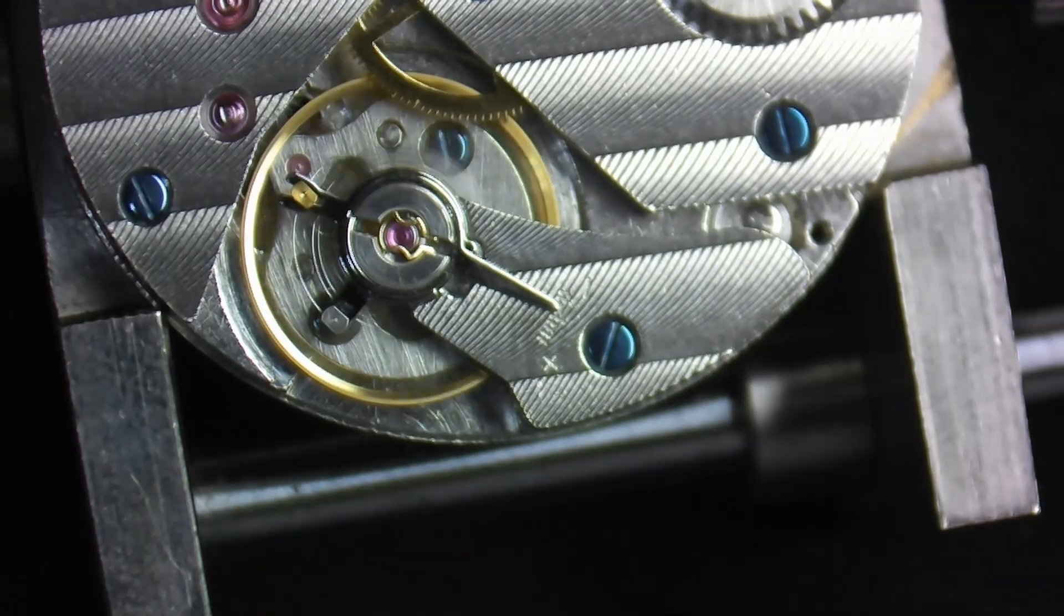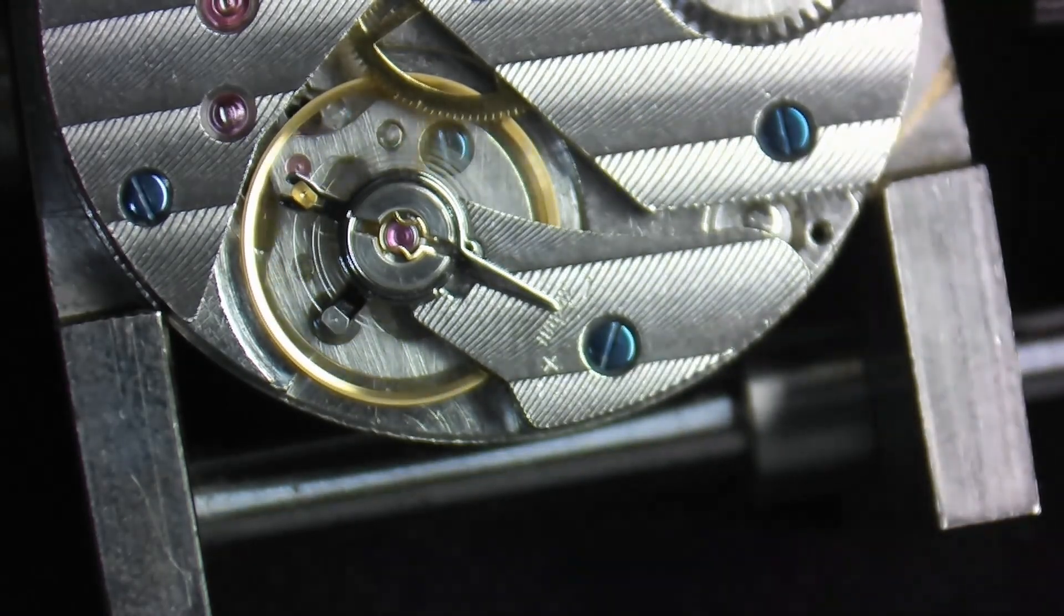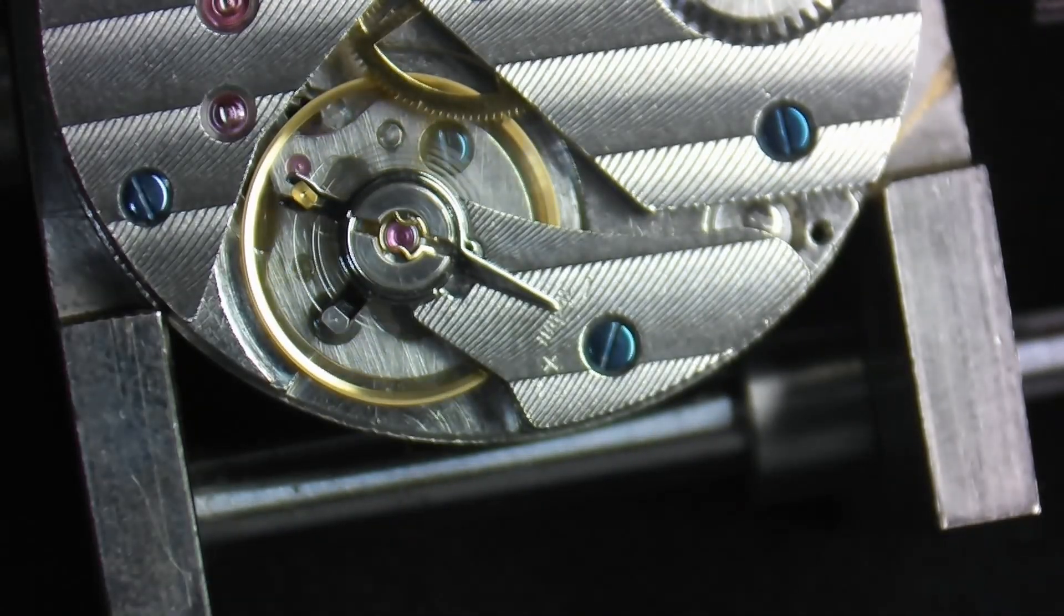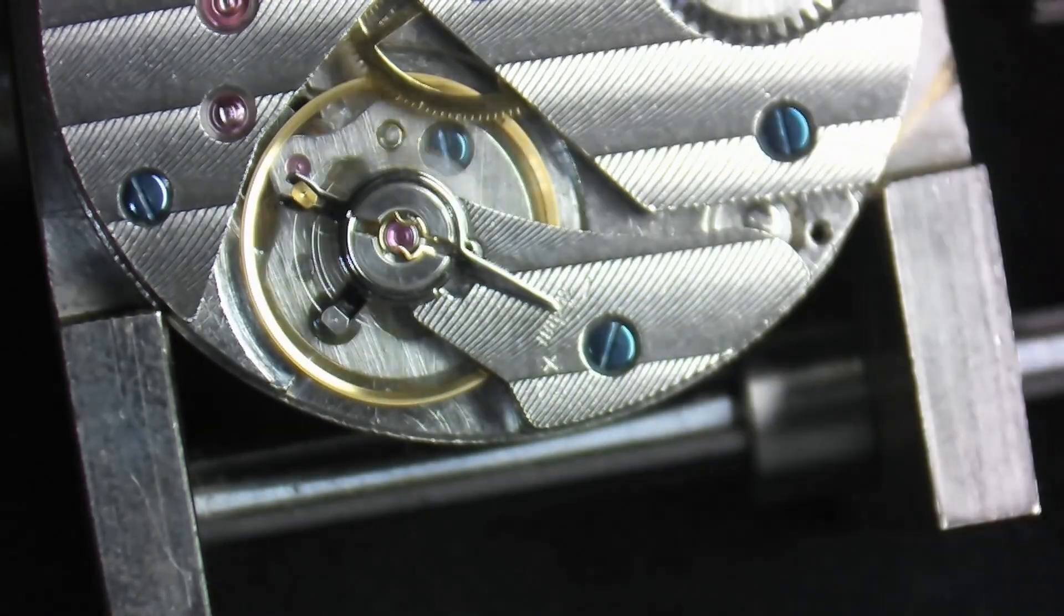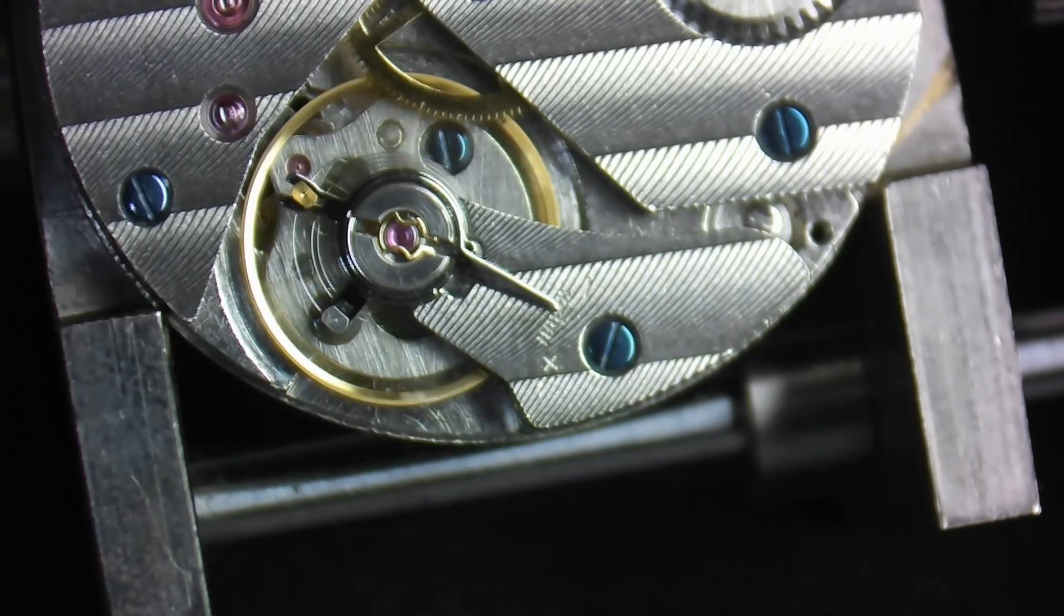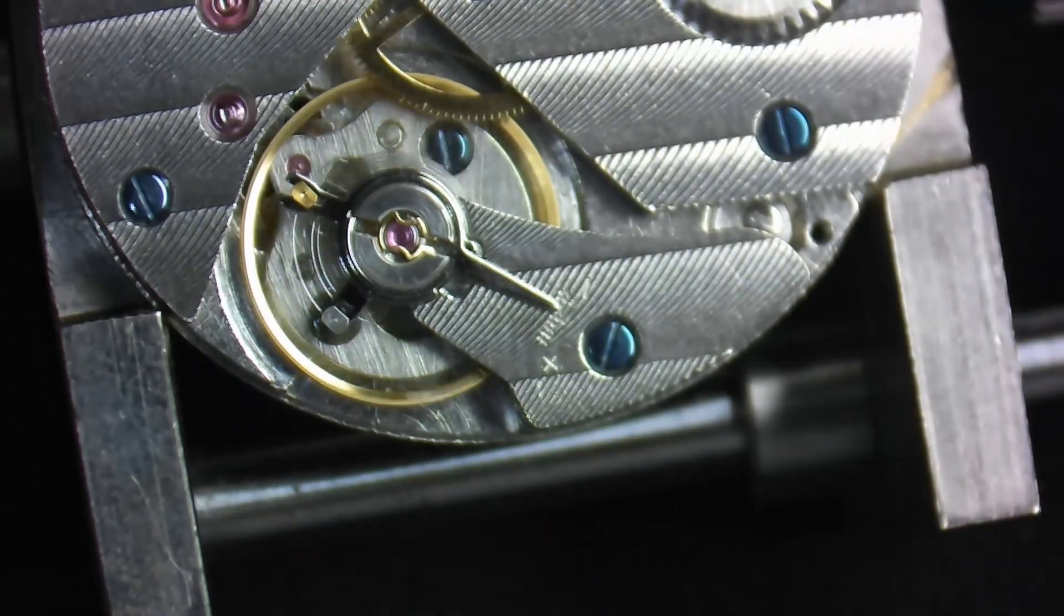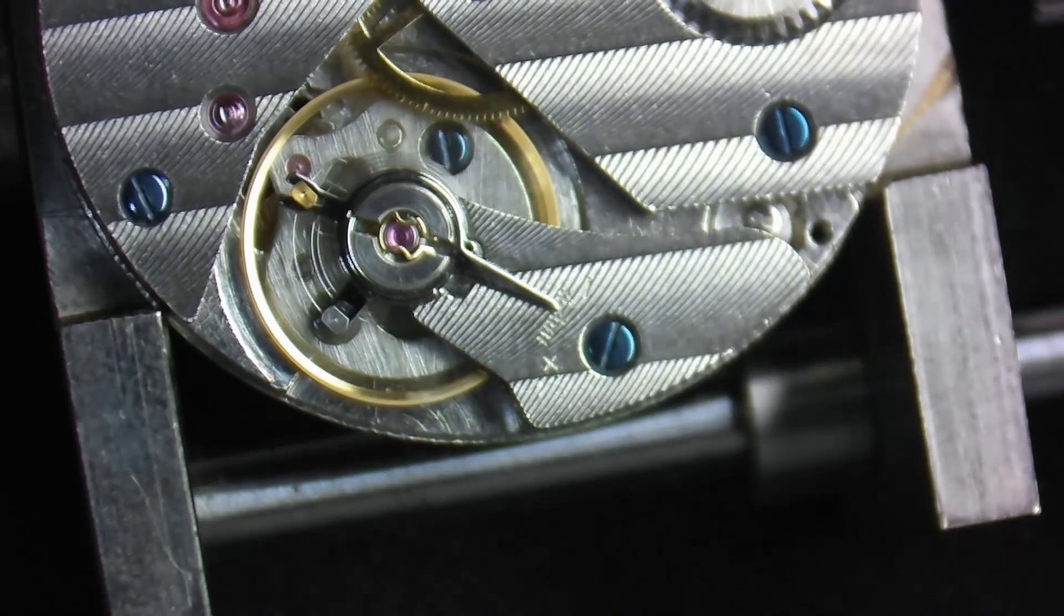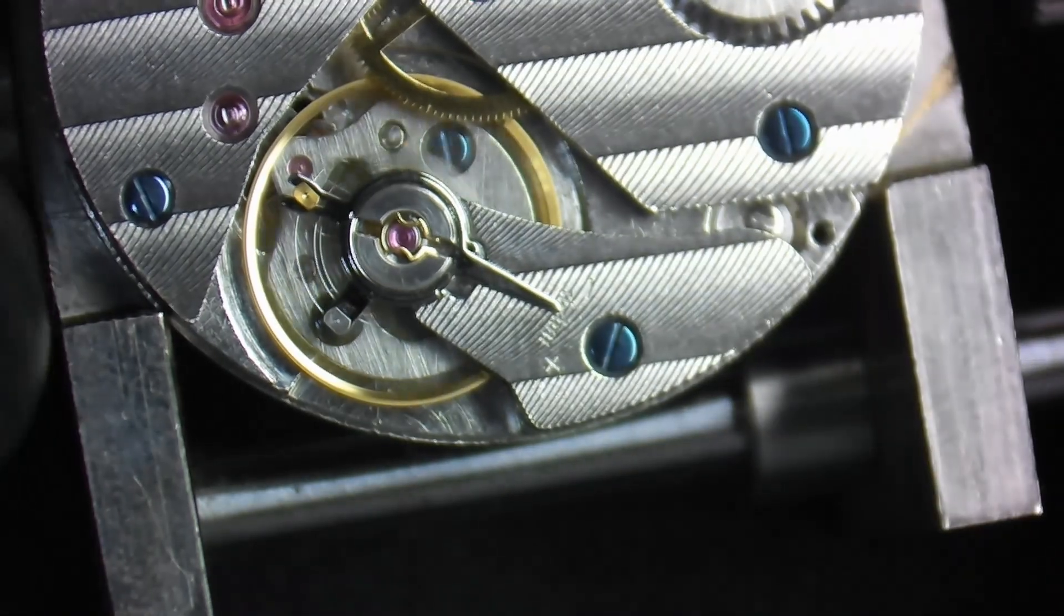It's also worth noting that one of the biggest problems you'll face when you're putting the balance wheel in is actually moving the pallet fork to the other side of the banking pin. What happens when the balance wheel drops into position, the impulse pin will actually be outside the pallet fork horns. And what you'll notice is the balance wheel will spin briefly, but then it comes to an abrupt stop. Basically what that means is the impulse pin is not in the slot of the pallet fork. So you just have to take it back off and then move the pallet fork back up to the top and then try it again.